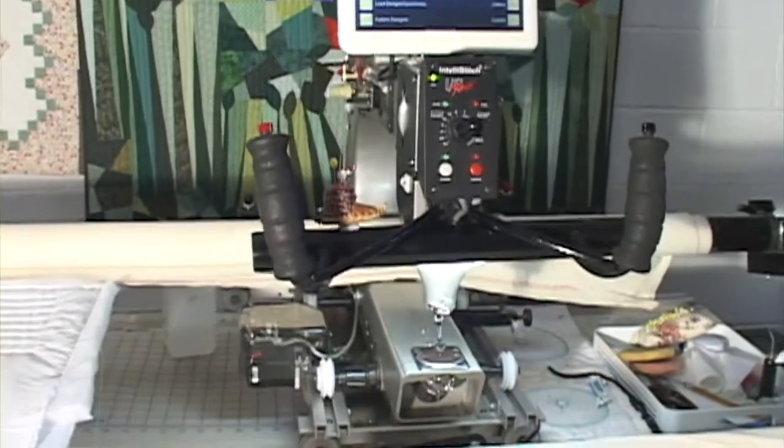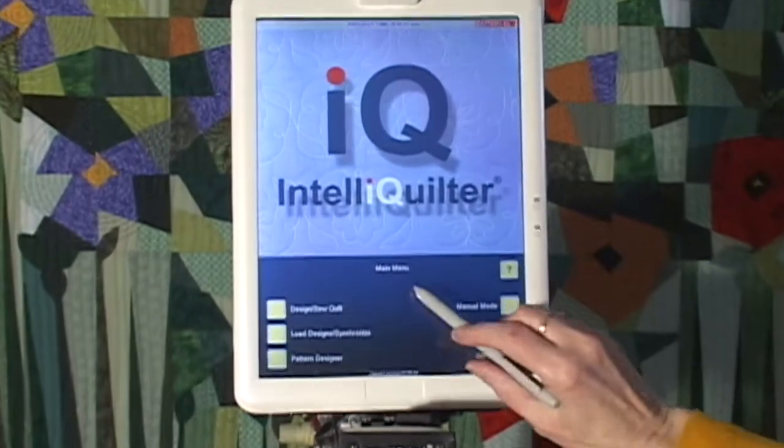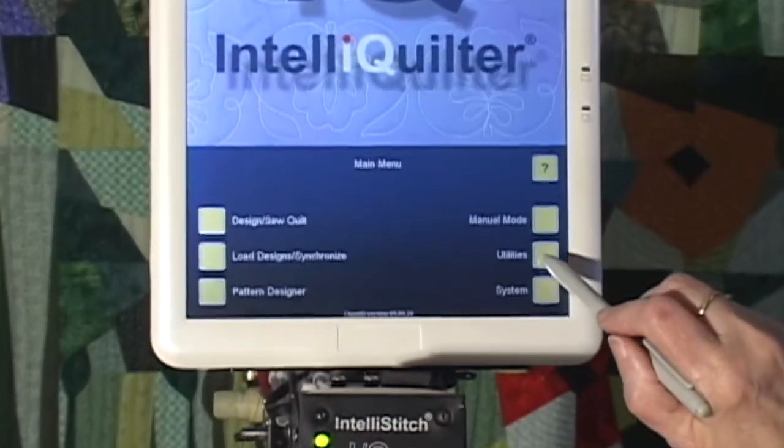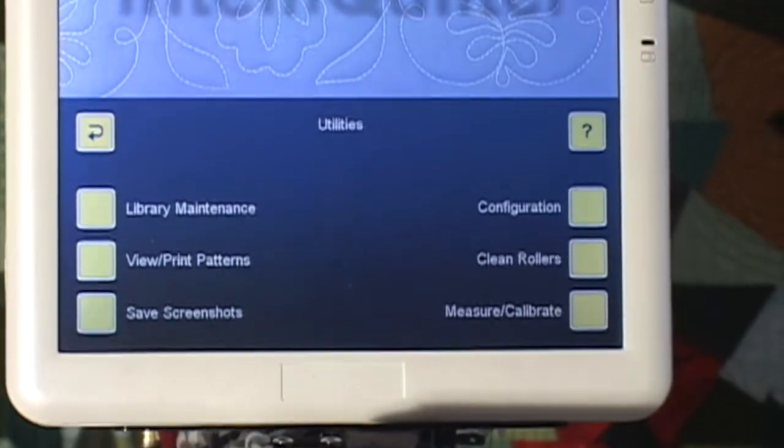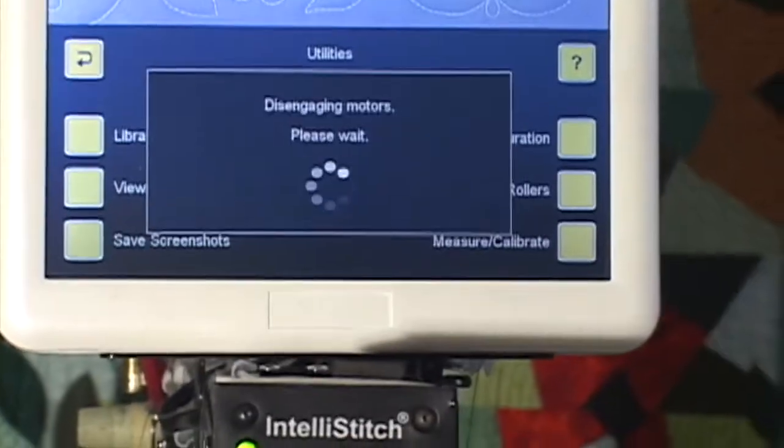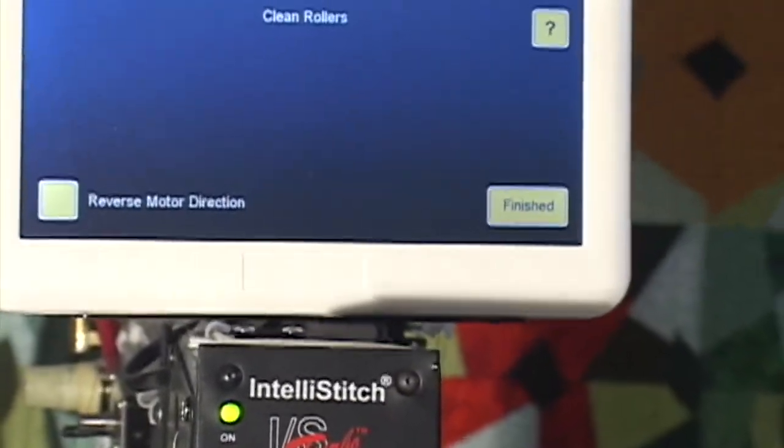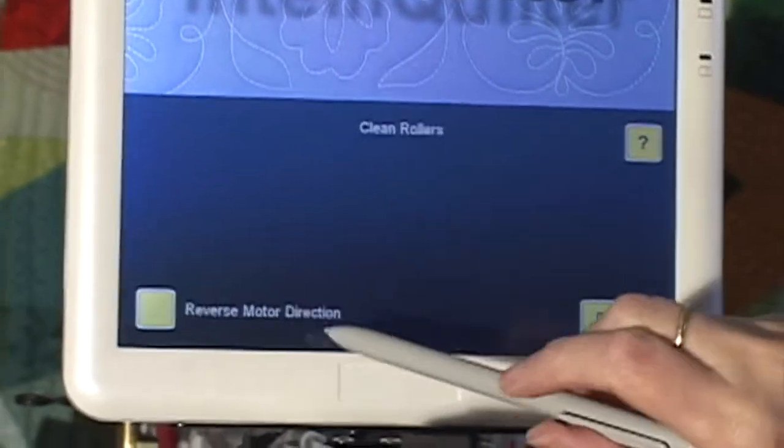So this is how you need to clean them. I'm at the main menu. I'm going to touch Utilities and then touch this button that says Clean Rollers. You will hear my drive wheels lift and start spinning. Okay, hear them going? I'll just point out this button down here which says Reverse Motor Direction.